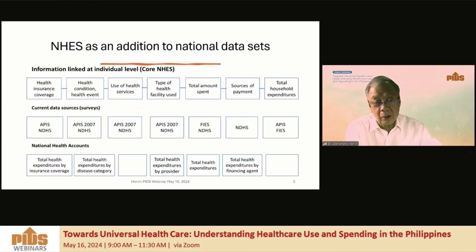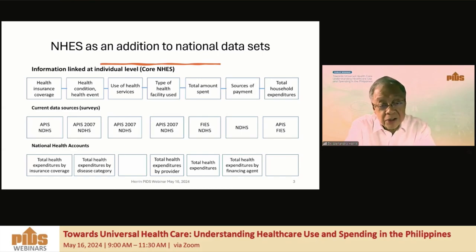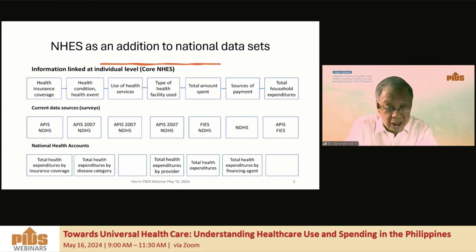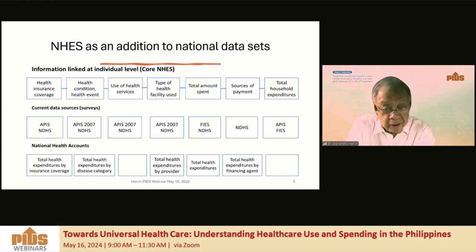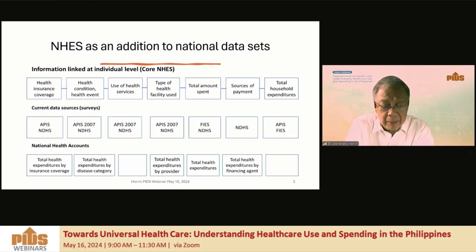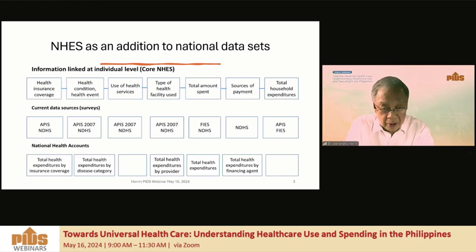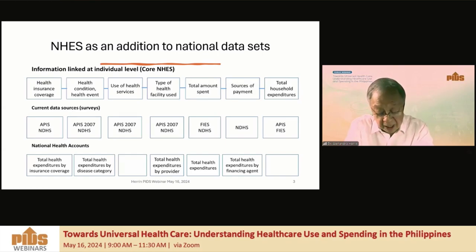NHES is an addition to our national data sets. What is unique about it is that it links individuals and households directly to their health care use and health care expenditures. Other data sets, like the FIES, the annual poverty indicator surveys, and national demographic health surveys, do have individual data on socioeconomic and demographic characteristics, but they lack other characteristics. Health expenditures, for example, are only at the household level and not the individual, and we have to estimate it separately.